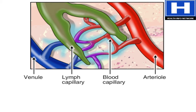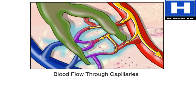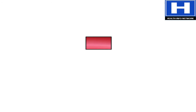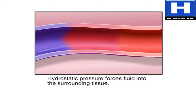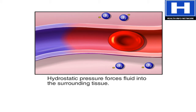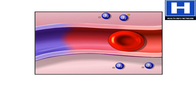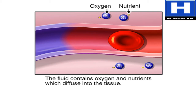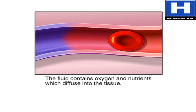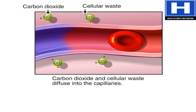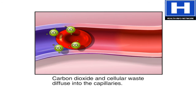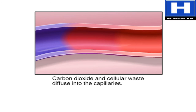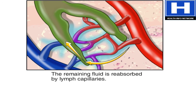The arterioles deliver blood to the capillaries from the heart, and the venules take blood away from the capillaries. As blood flows through the capillaries, it is under pressure — this is called hydrostatic pressure. This pressure forces some of the fluid in the blood out of the capillary into surrounding tissue. Oxygen from the red blood cells and nutrients in the fluid then diffuse into the tissue, while carbon dioxide and cellular waste products in the tissue diffuse back into the bloodstream. The capillaries reabsorb most of the fluid, and the lymph capillaries absorb what fluid is left.